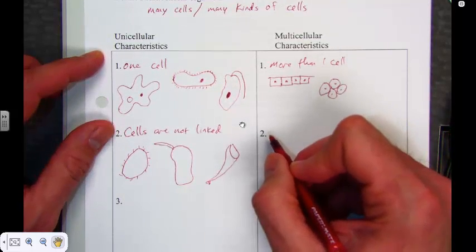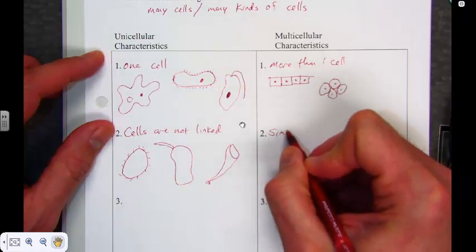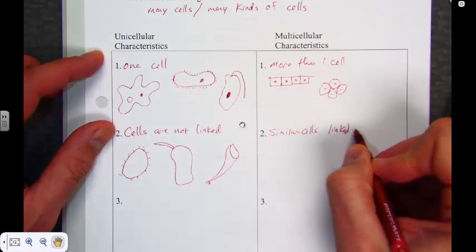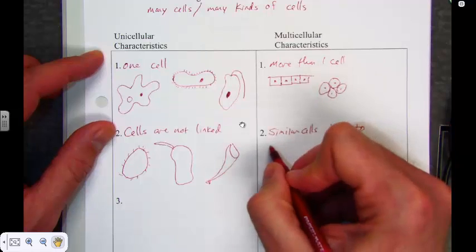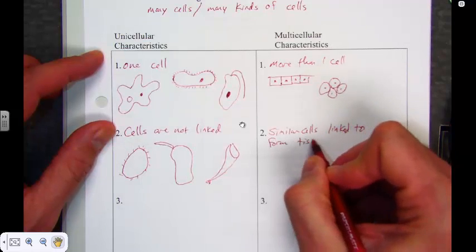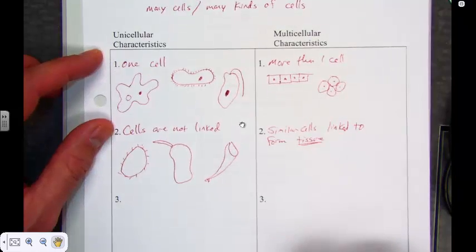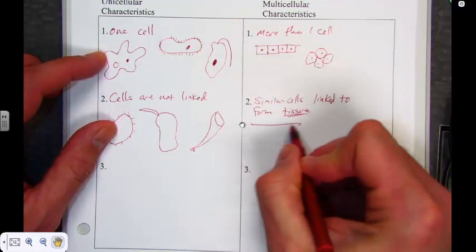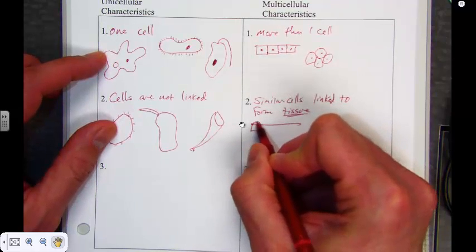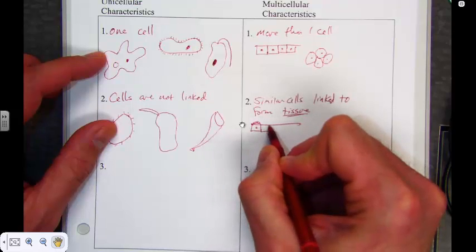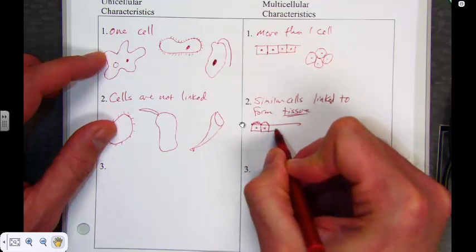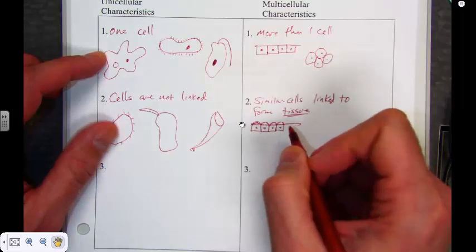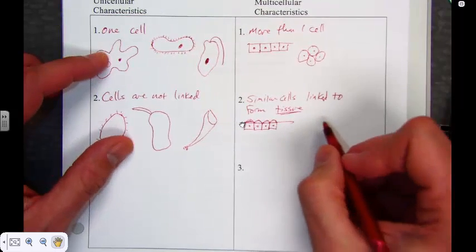In contrast, with multicellular organisms, these cells are linked. So we have similar cells linked to form tissue. And that's kind of a key word to understand that tissue is a whole bunch of the same type of cells that might all be linked together. So these might be just some examples of different types of cells that are all linked together, and they form tissues that carry out a particular function.